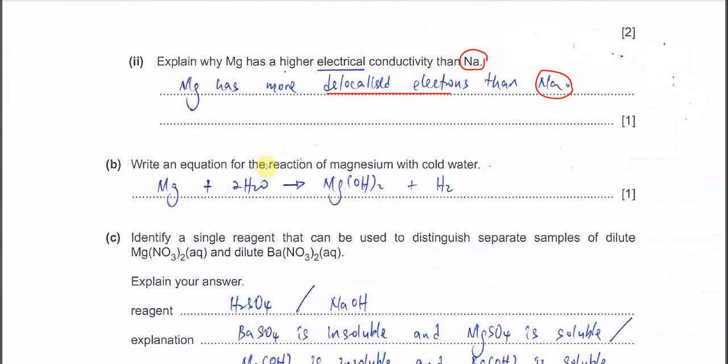Part B, write an equation for the reaction of magnesium with cold water. When they ask for the symbol equation you can give accordingly; when they don't ask, just ignore that. Magnesium with water will form magnesium hydroxide, the white precipitate, and it will form H2 gas.